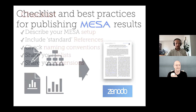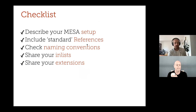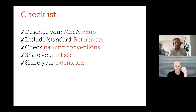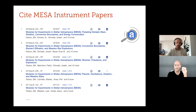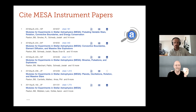So this is a brief checklist. After you describe your Mesa setup in your paper, something you want to do is include standard references. There are a growing number of Mesa instrument papers — five at this time — and it's useful for the reader to know about them so they can access the deep secrets of Mesa. We actually created a little ADS library, linked in this PDF, that you can use to download directly your BibTeX, so it can be very easy to include in your publication.